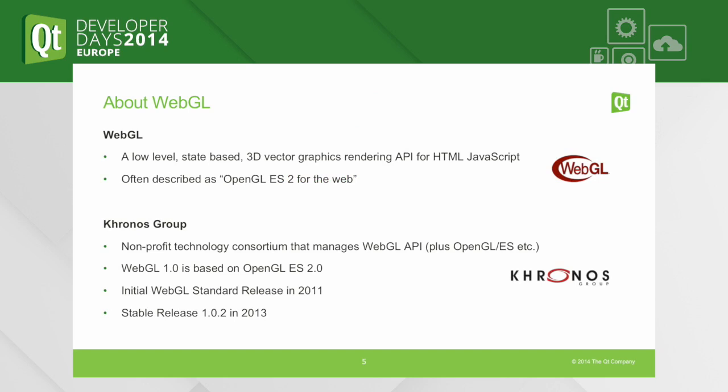WebGL was standardized by the Khronos Group, a non-profit technology consortium that handles WebGL, OpenGL, OpenGL ES, and a bunch of other open APIs. It was based on the OpenGL ES 2.0 standard. Many people have asked me why OpenGL ES 2 and not OpenGL — basically, mobile was booming at the time standardization started, so they wanted to make it as portable on mobile devices as possible.